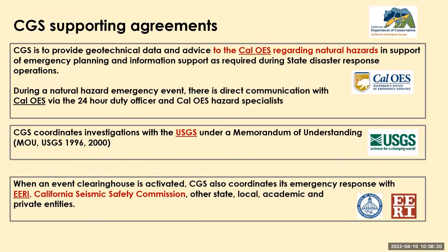The California Geological Survey has supporting agreements with all its managing partners — some are formal, some are informal. CGS provides technical data and advice to Cal OES regarding natural hazards in support of emergency planning, with direct communication via the 24-hour duty officer and Cal OES hazard specialist during natural hazard emergency events. CGS coordinates investigations with the USGS under a memorandum of understanding, and when a clearinghouse is activated, CGS also coordinates with ERI, the California Seismic Safety Commission, and other state, local, and academic private entities.